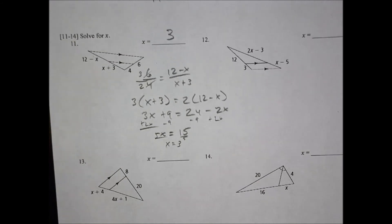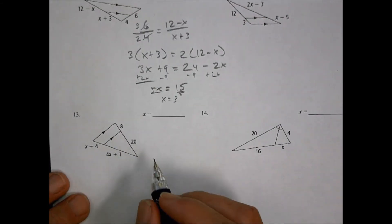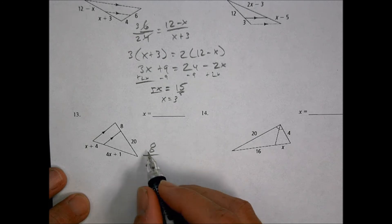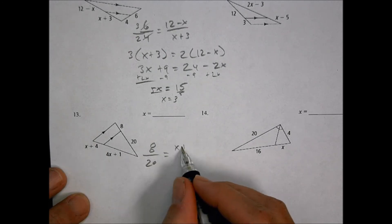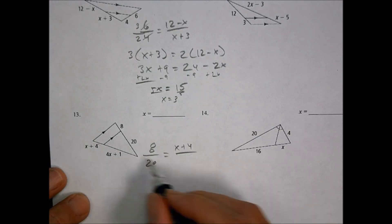And finally, number 13, our last one, but we're going to do it together today. We have our little bit over our longer bit equals our little bit, x plus 4, over our longer bit, 4x plus 1.